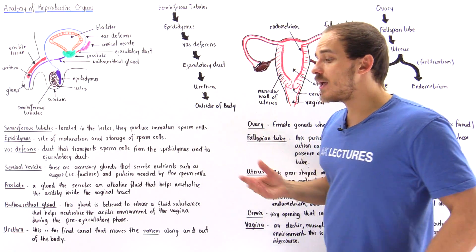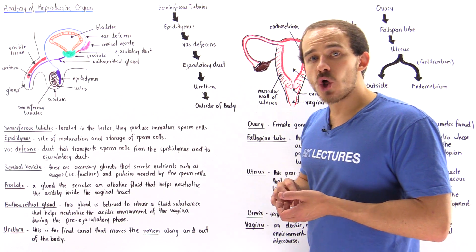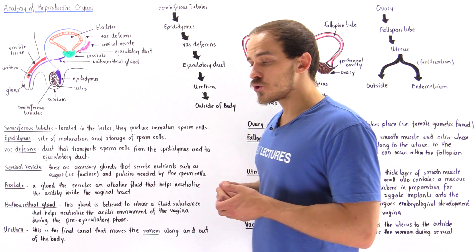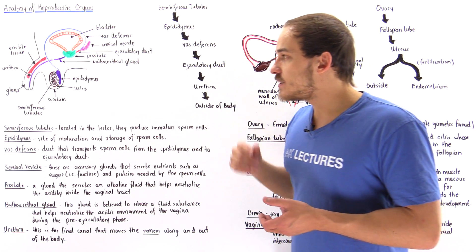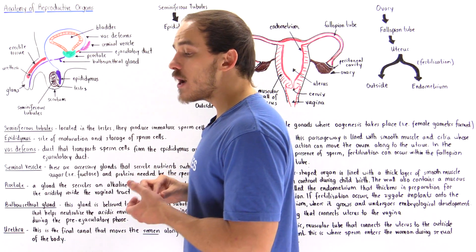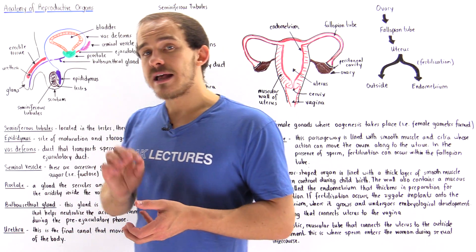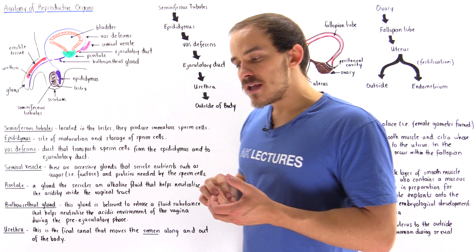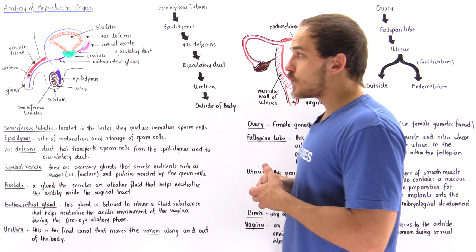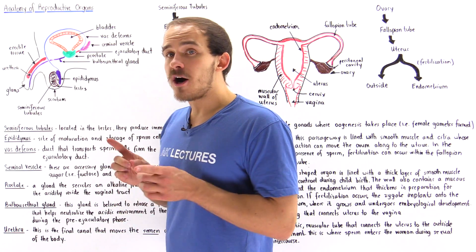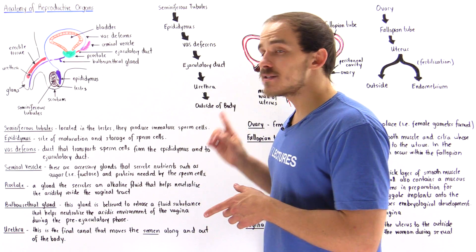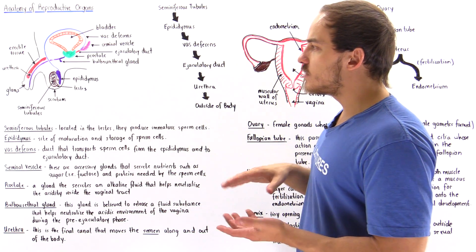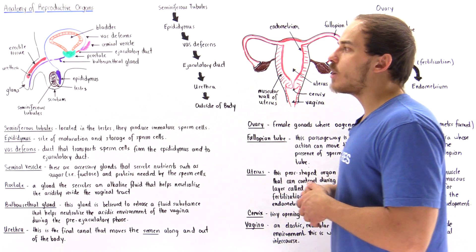The testes are enclosed in a sac-like structure, a flap of skin known as the scrotum. The scrotum maintains a slightly lower temperature than the body core temperature. For example, if the normal body core temperature is about 37 degrees Celsius, then the temperature of the scrotum is around 35 degrees Celsius — two Celsius degrees lower. This is because the enzymes involved in producing sperm cells function effectively and efficiently at a slightly lower temperature.